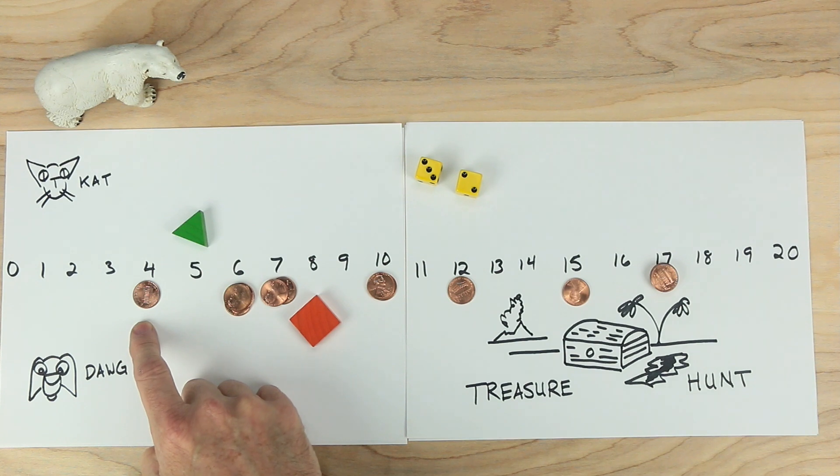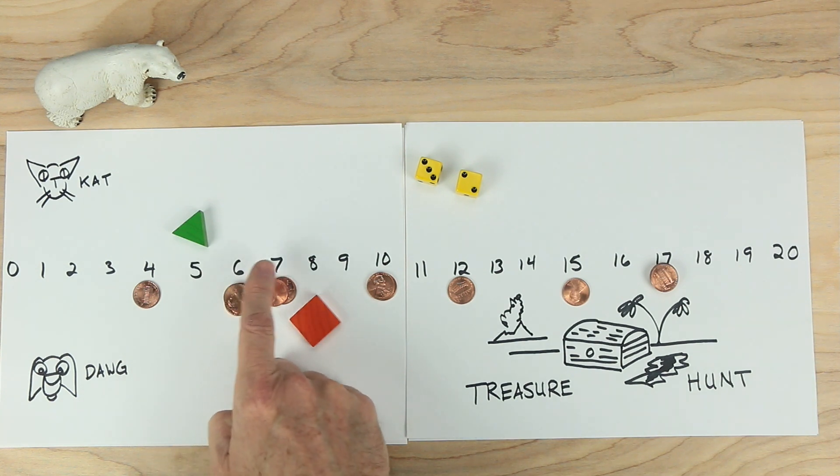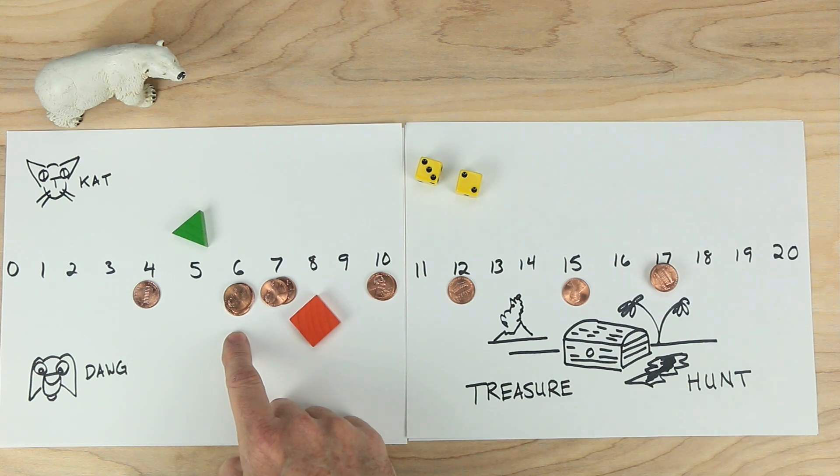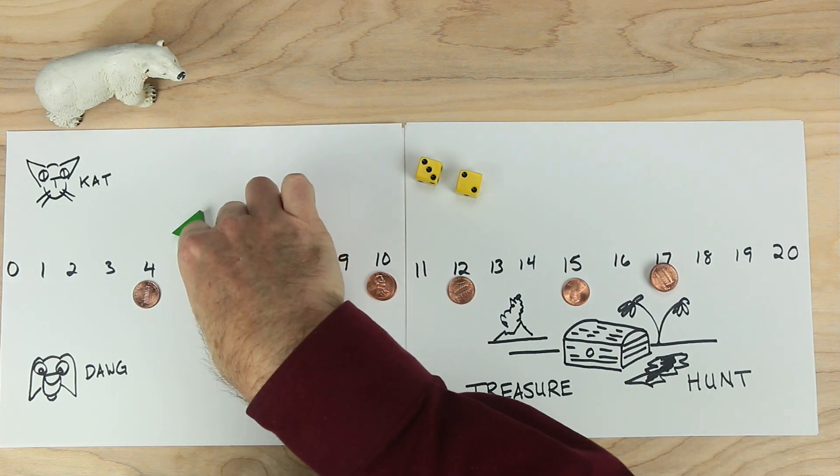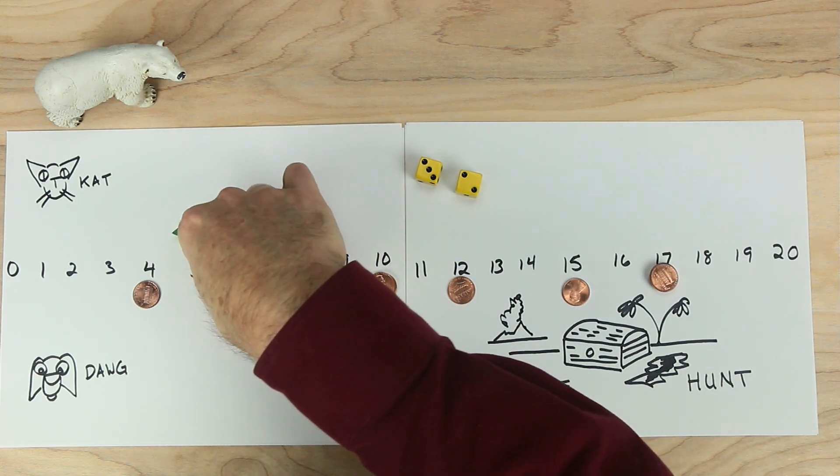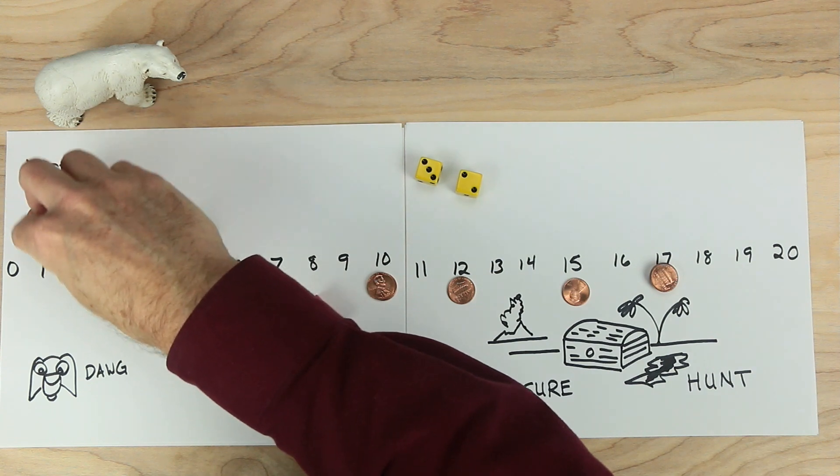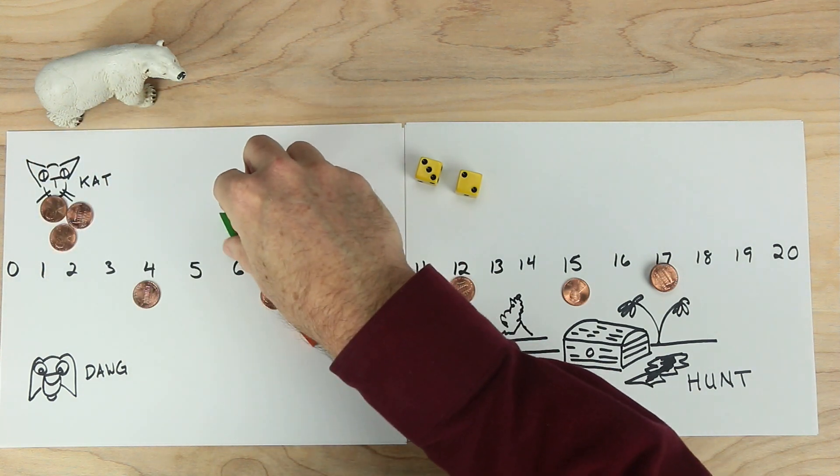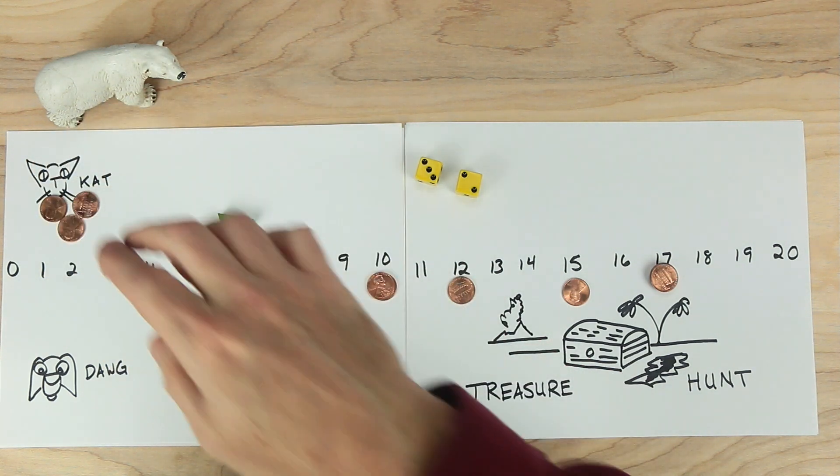But what if cat decides to go three forward. One, two, three, and then two back. One, two. Look what happens. Cat collects six, this number six treasure, which is three pieces of gold. So cat is at number six now and has already collected some treasure.